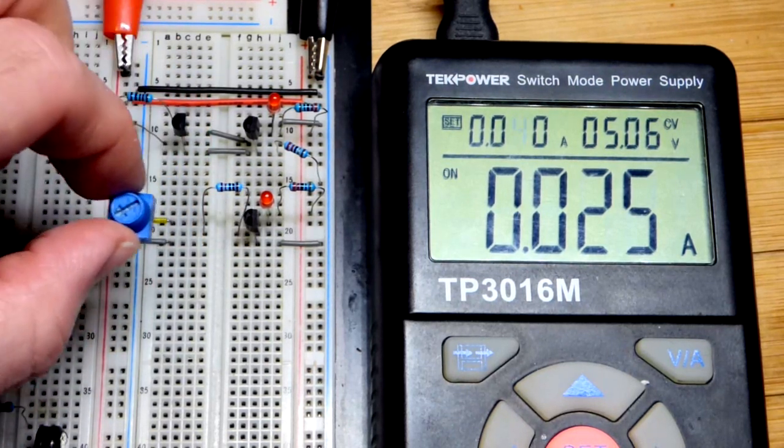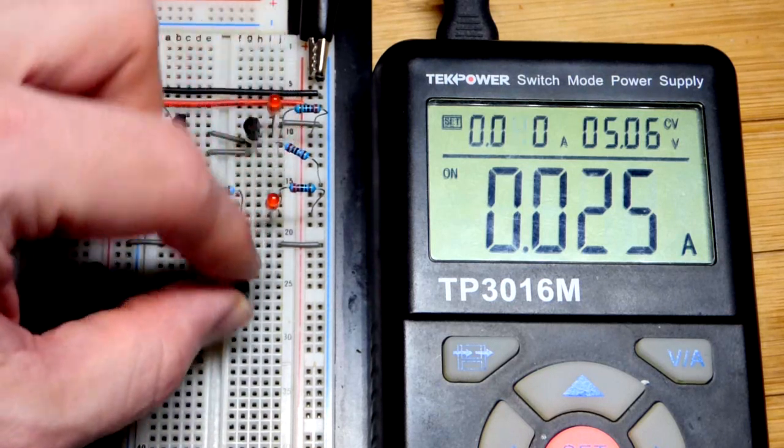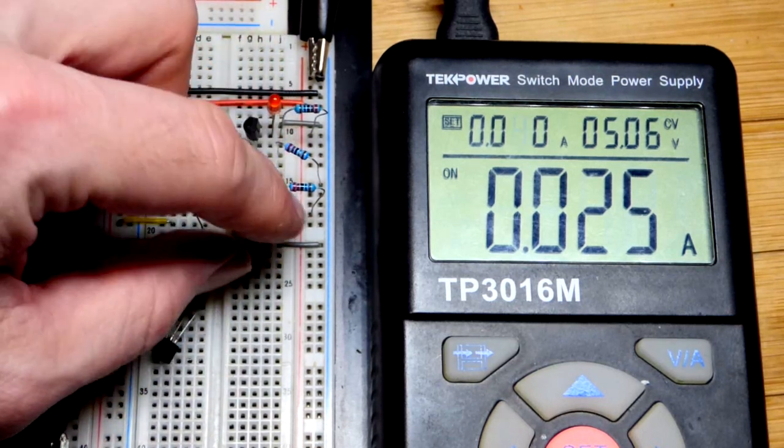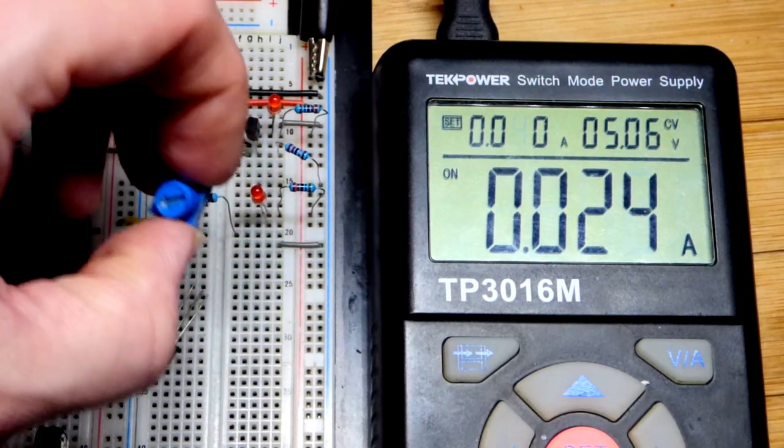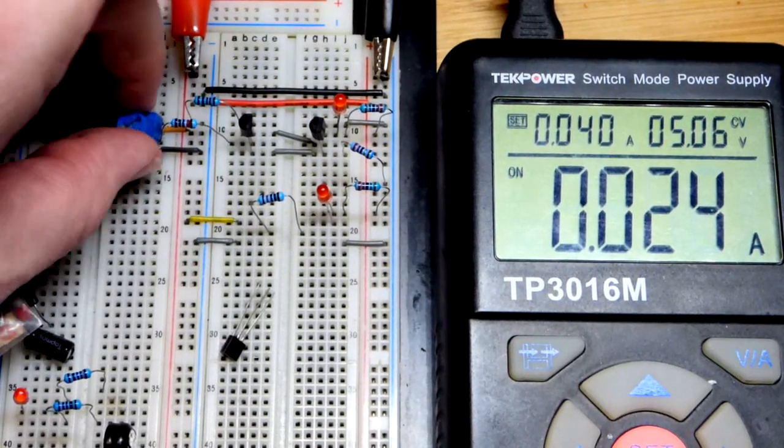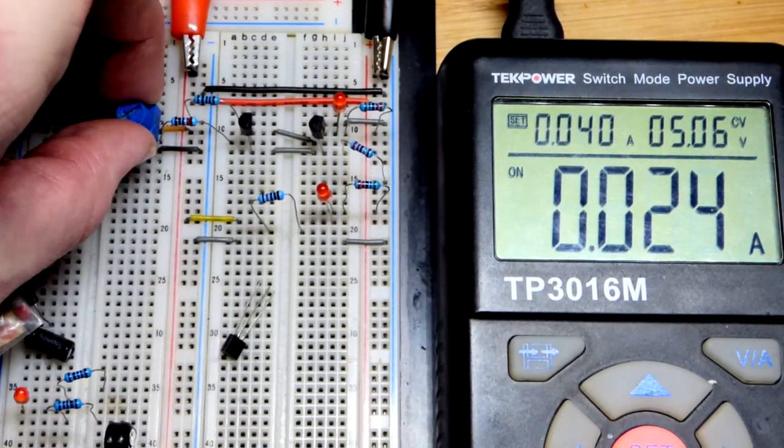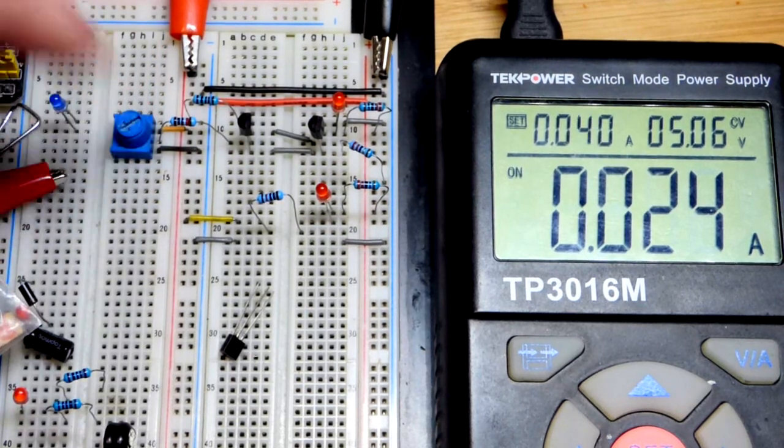So all I'm going to do is yank this trim pot. And you can see if I yank the transistor, I was given a false signal, the current's not changing. Now there's no current going through any of that. So we're going to take the trim pot here and put it over here. It's getting a little crowded right there.